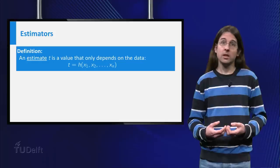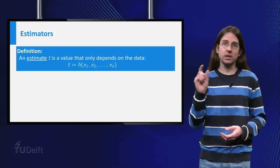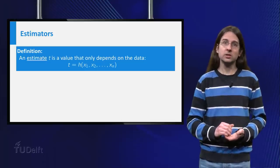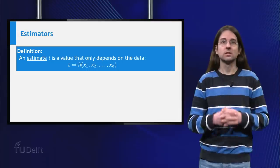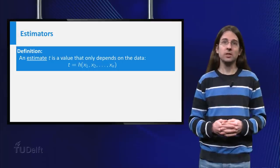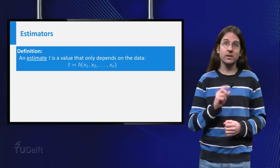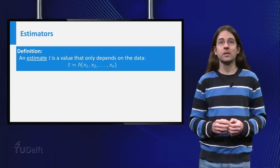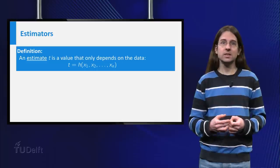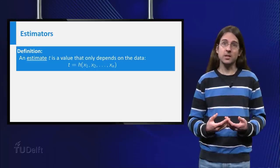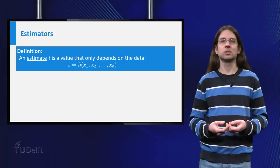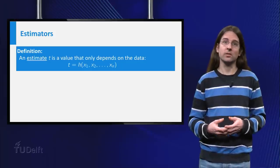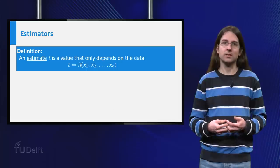Formally, if you do a number of experiments with results x1, x2 up till xn, an estimate is a function of these outcomes. The important part here is that the estimate can only depend on the outcomes of the experiment and does not depend on the distribution from which these xi are drawn. This is necessary as we do not know the distribution. Otherwise, if the estimate would depend on the distribution, we would not be able to calculate the estimate.